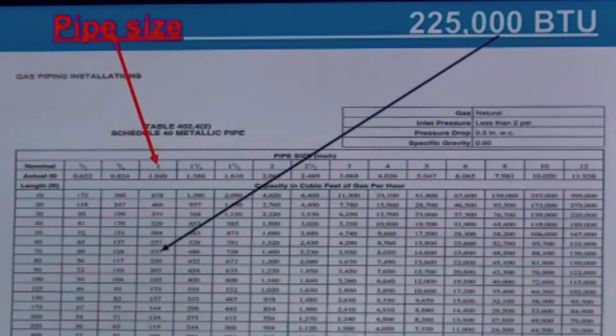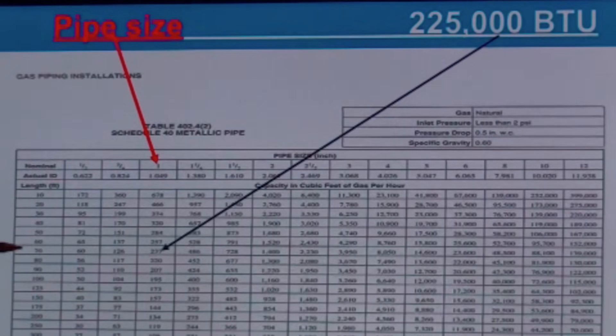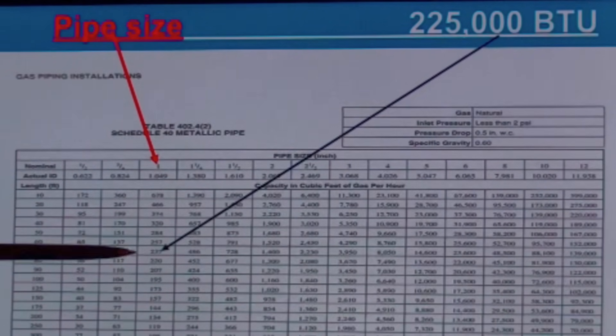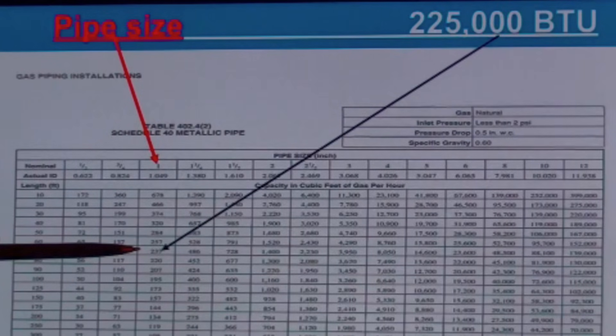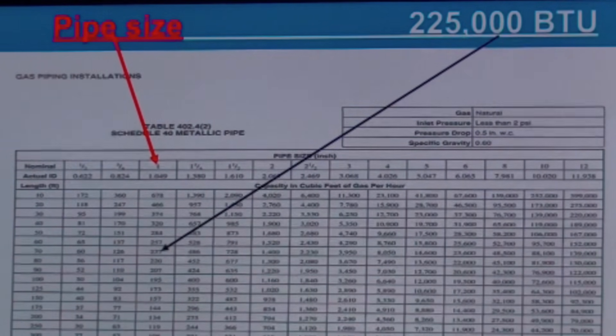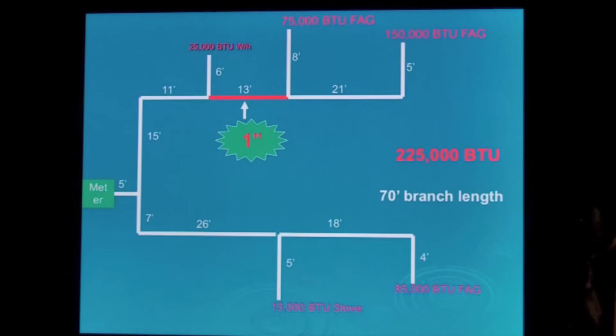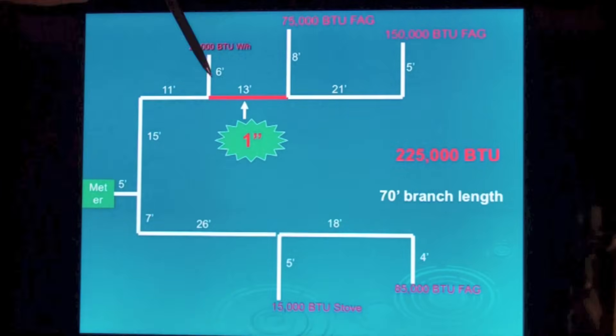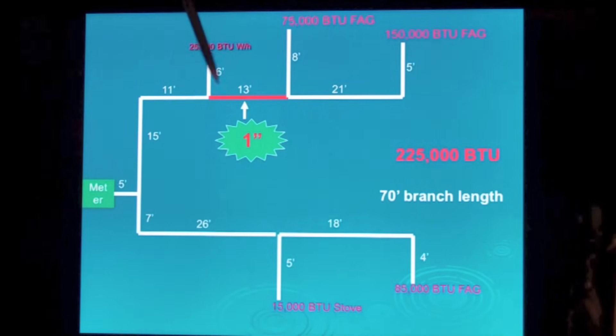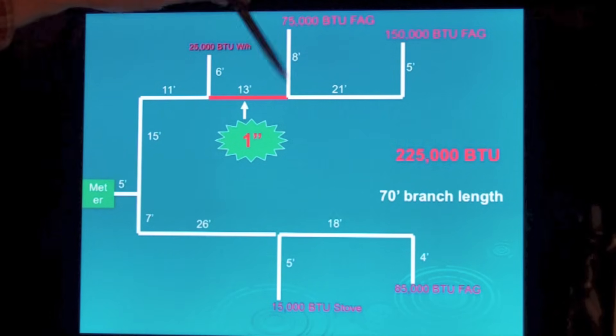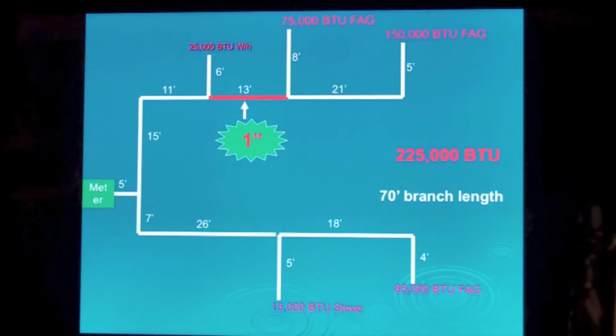Go to our chart again, we're at the 70 foot. 225,000. One inch will do 237,000. So one inch pipe. This length between here and here is one inch.